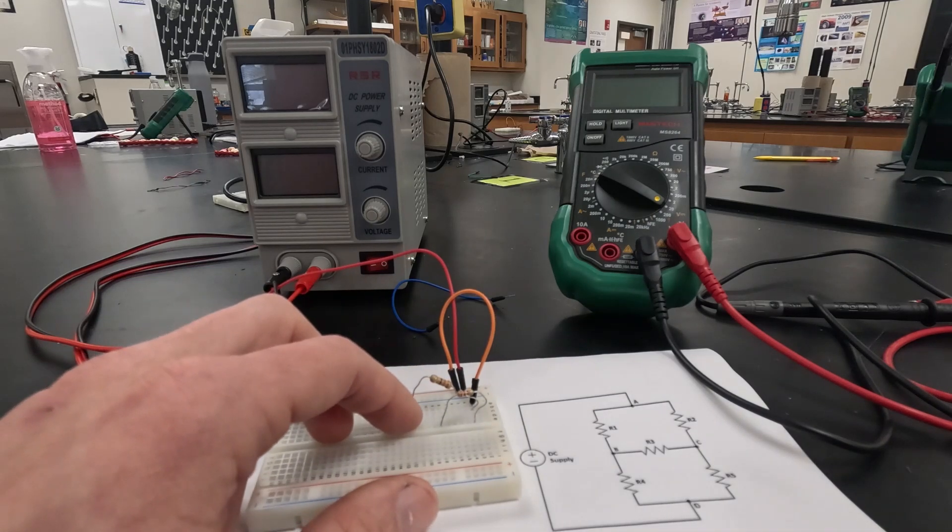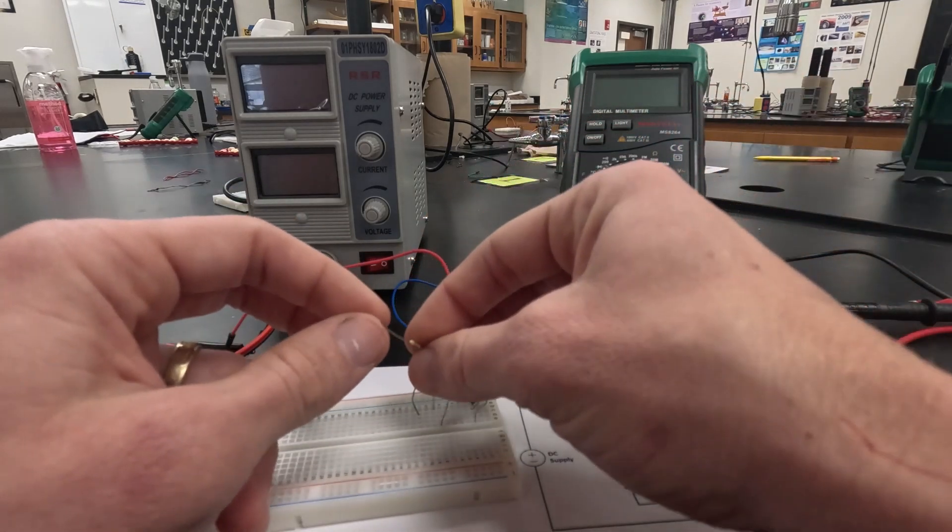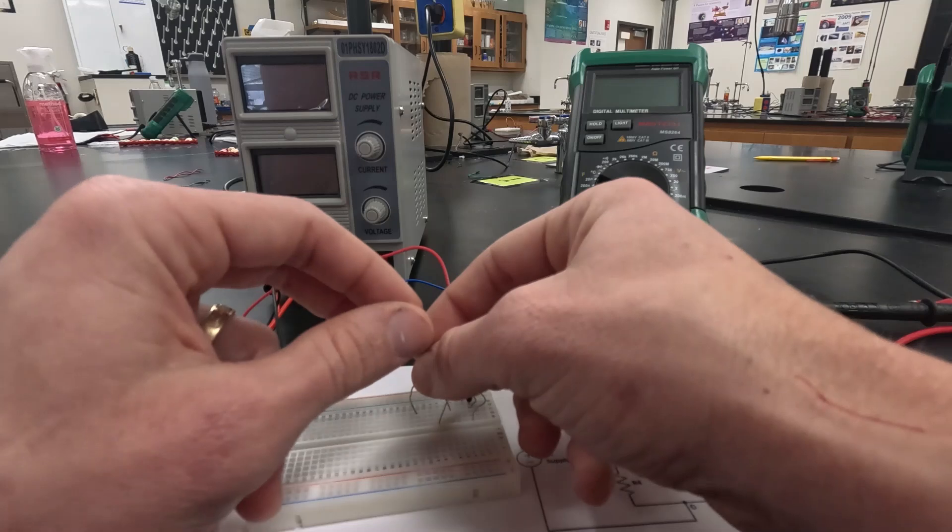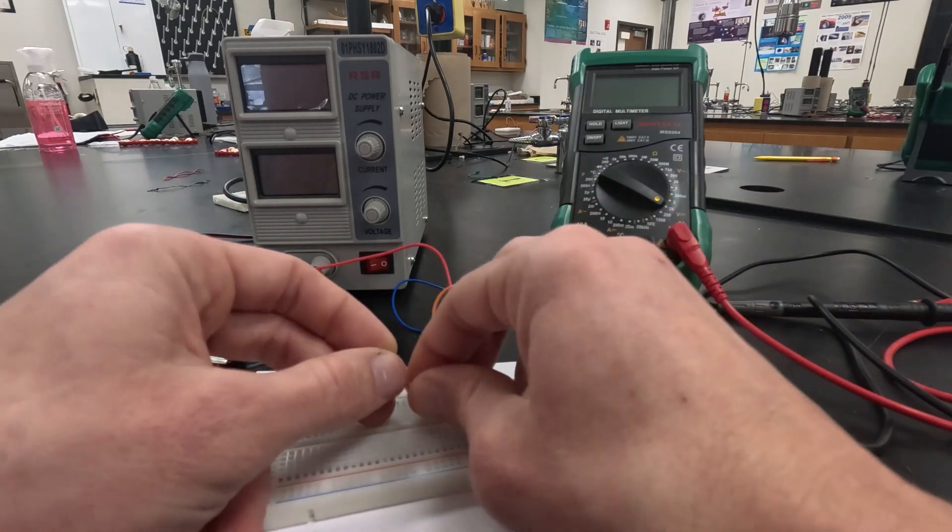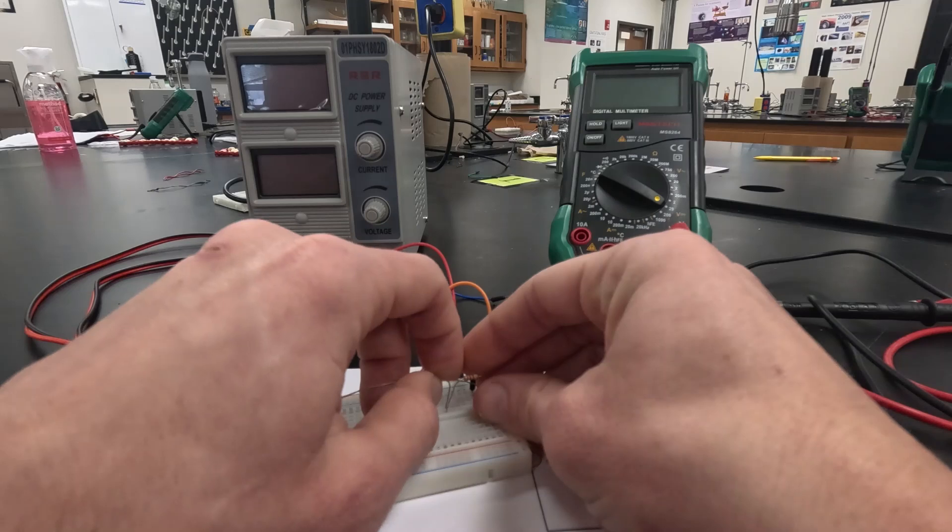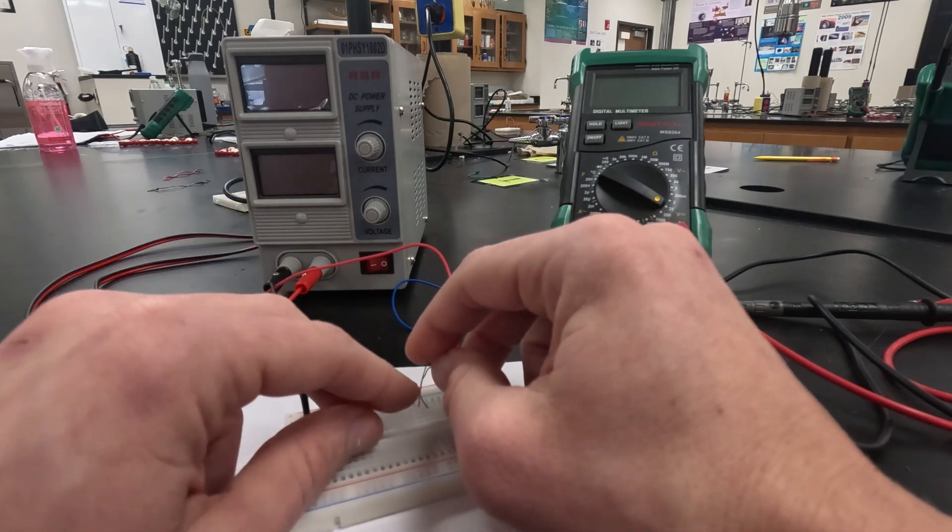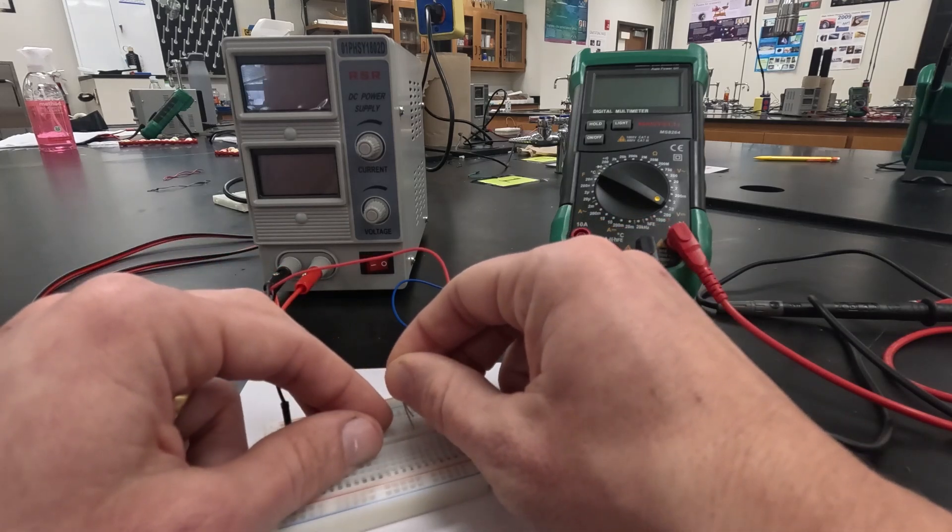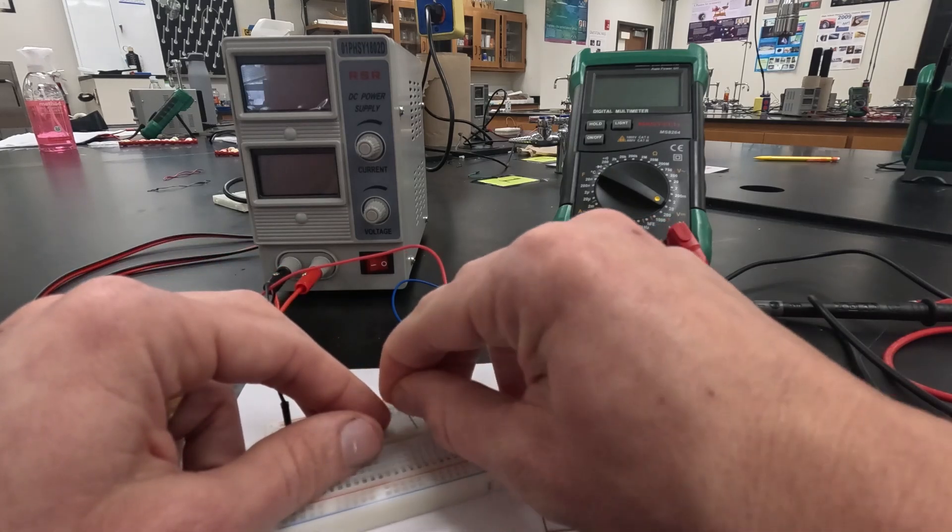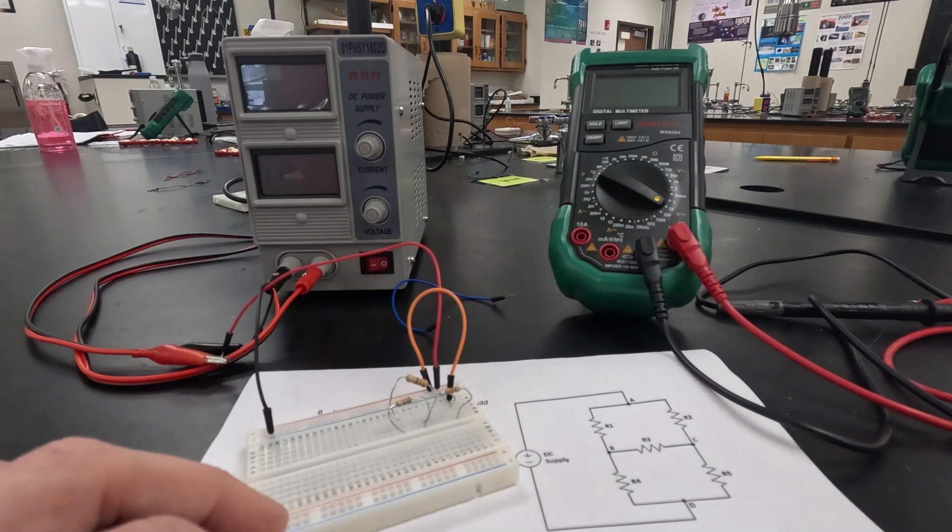Then I need one resistor that connects between those two. I'm going to take my 150 and that 150 is going to go from row eight where the 220 ended, and then it's going to go down to row 11 where the 330 ohm was. So that gives me that jumper in between.